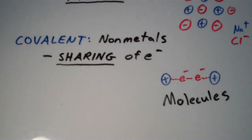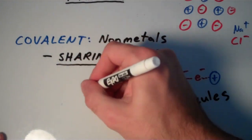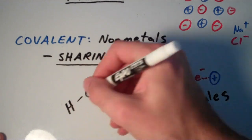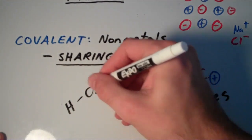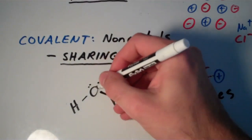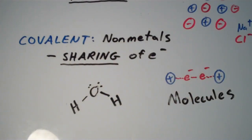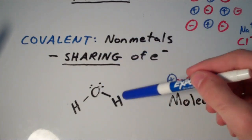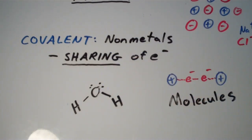So if we have a molecule, like say we have something like H2O. So this is a water molecule. So the bonds between the oxygen and the hydrogen, are they ionic or covalent?